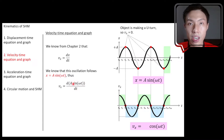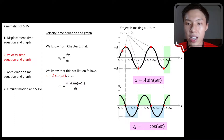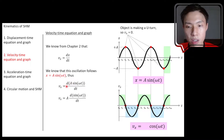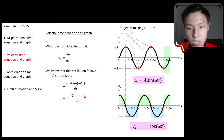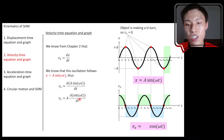First, check whether there's anything constant that does not change with time — if so, you can bring it out of the differentiation. The amplitude A is constant; it never changes. So we bring it out, giving us A times d[sin(ωt)]/dt. Now to differentiate sin(ωt) with respect to t, you cannot do it directly because inside the bracket is ωt but you're differentiating against t. So you need to use the chain rule.